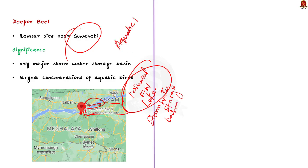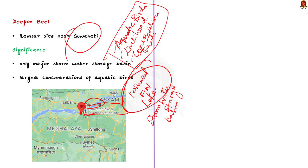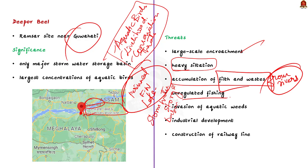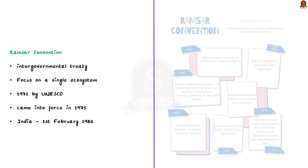Deepur Beel is the only wetland in Assam designated under the Ramsar Convention. It is the only major stormwater storage basin for Guwahati and home to some of the largest concentrations of aquatic birds in Assam. However, it faces threats including garbage dumping, quarrying, railway line construction, encroachment, heavy siltation from surrounding hills, waste from the Bharalu and Bahini rivers, unregulated fishing, and invasion of aquatic weeds — pushing this ecosystem to the brink.